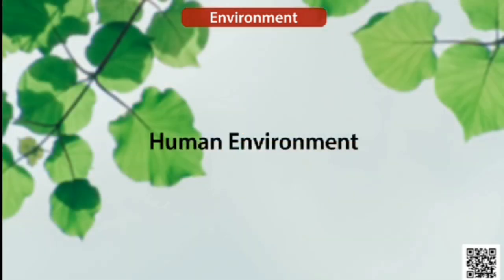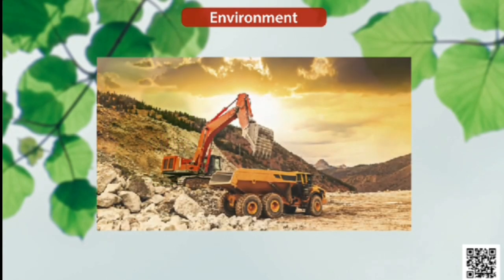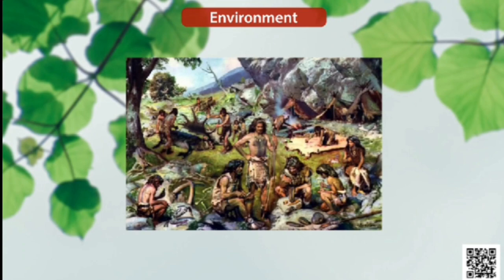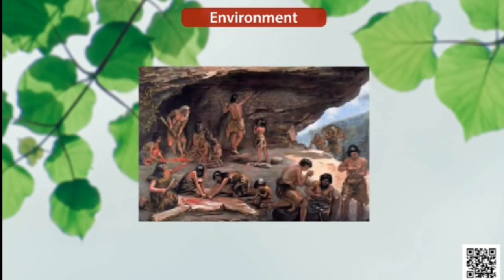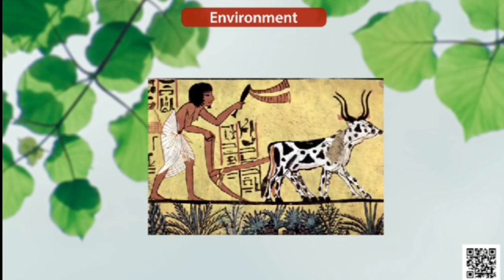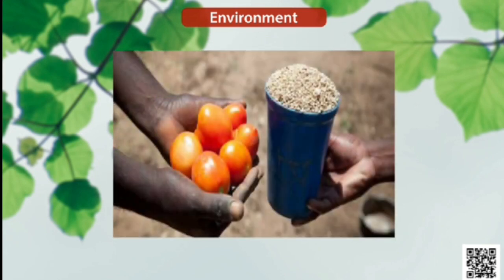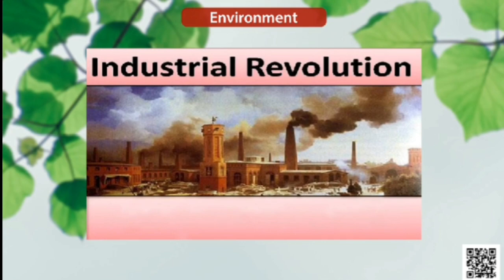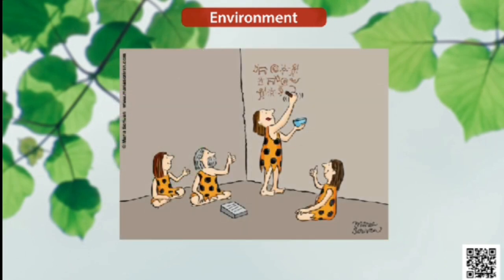Human beings interact with the environment and modify it according to their needs. Early humans adapted themselves to natural surroundings, led a simple life and fulfilled their requirements from nature. With time, needs grew and became more varied — humans learned to grow crops, domesticate animals and lead a settled life. The wheel was invented, surplus food was produced, the barter system emerged, trade started and commerce developed. The industrial revolution enabled large-scale production, transportation became faster, and the information revolution made communication easier and speedier across the world.